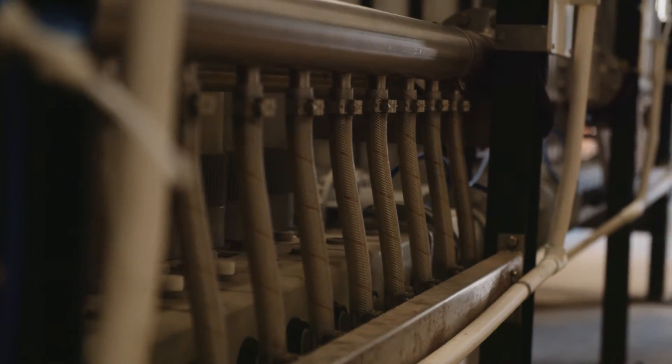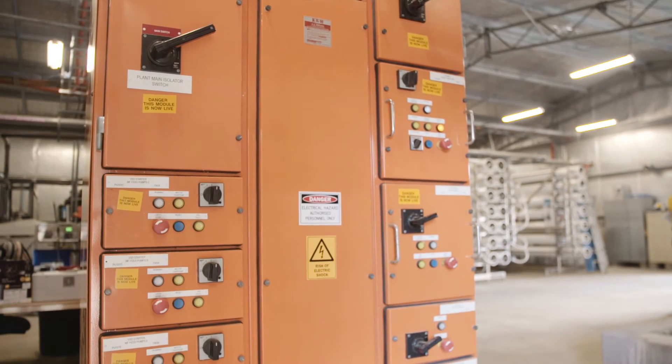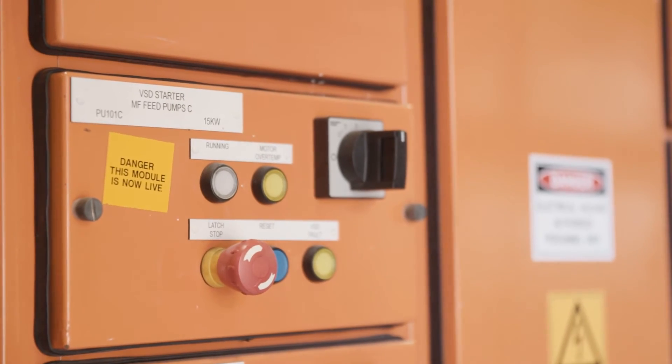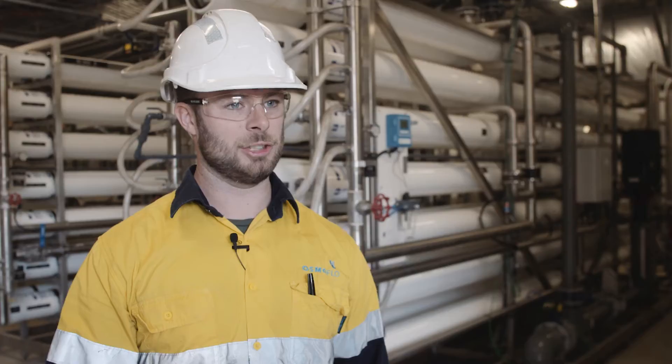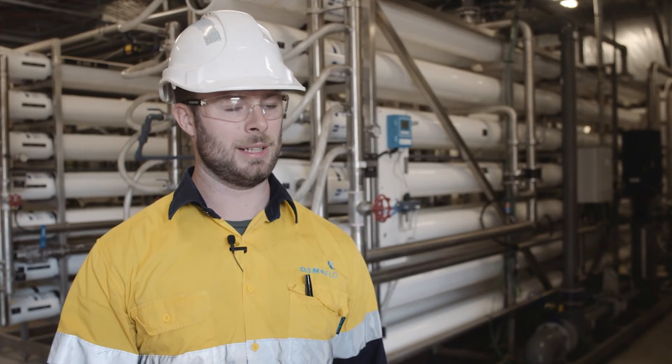The Mount Piper plant feed water is 3,000 milligrams per litre where the plant has been designed to reduce that to below 50 milligrams per litre.